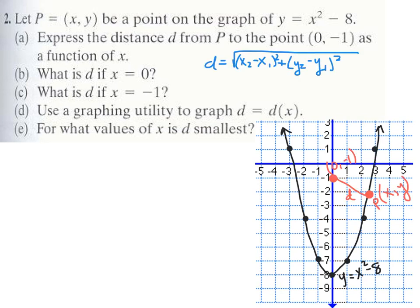Here is the parabola y equals x squared minus 8 graphed — it's a parent function shifted down 8 along the y-axis. I also have the point (0, -1) because that's what part A discusses, and I've plotted an arbitrary point P. We don't know where it goes; we just know it has an x-coordinate and a y-coordinate. Part A is about distance between two points, so that's the distance formula.